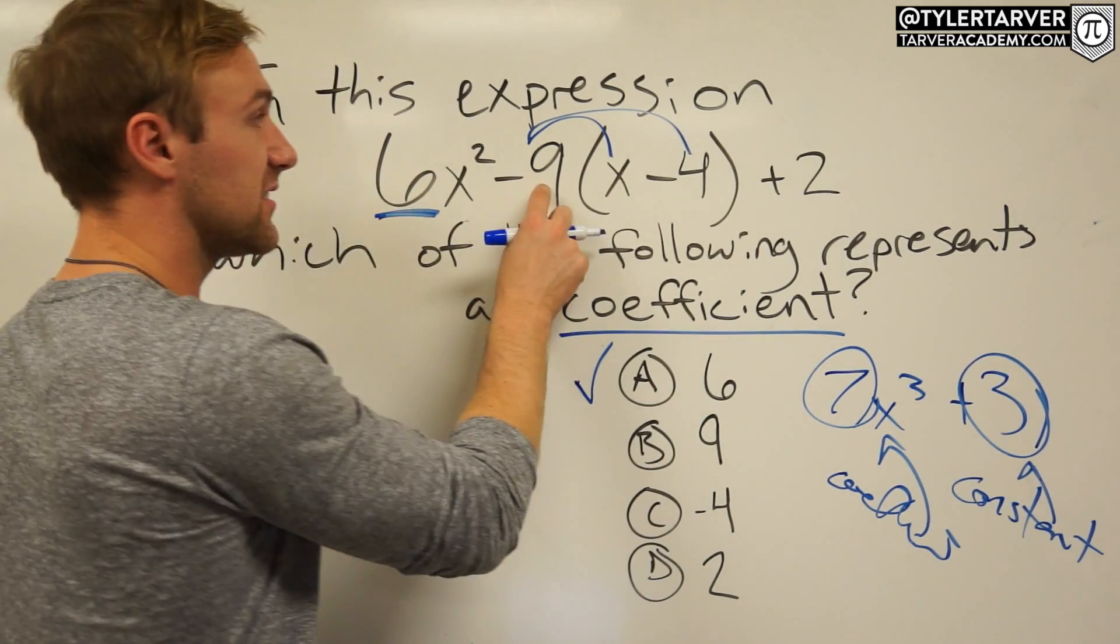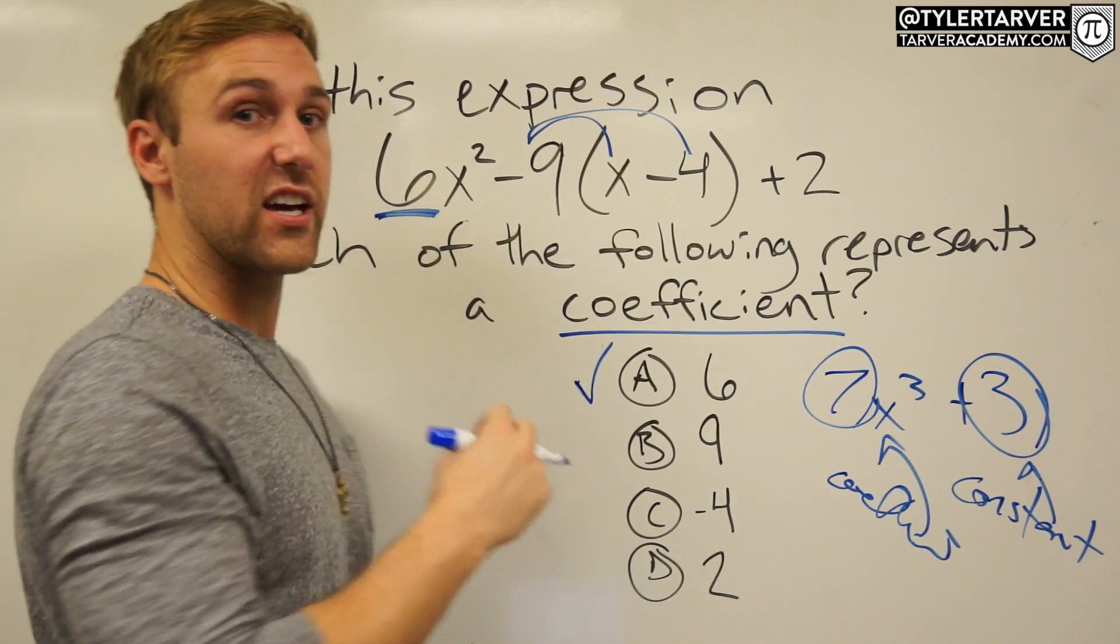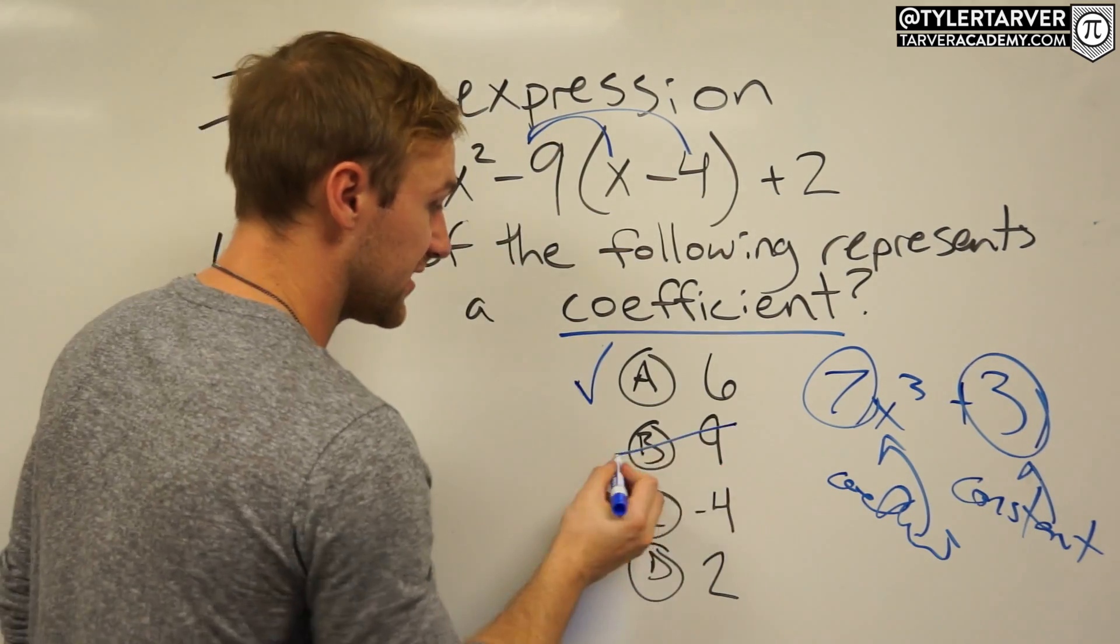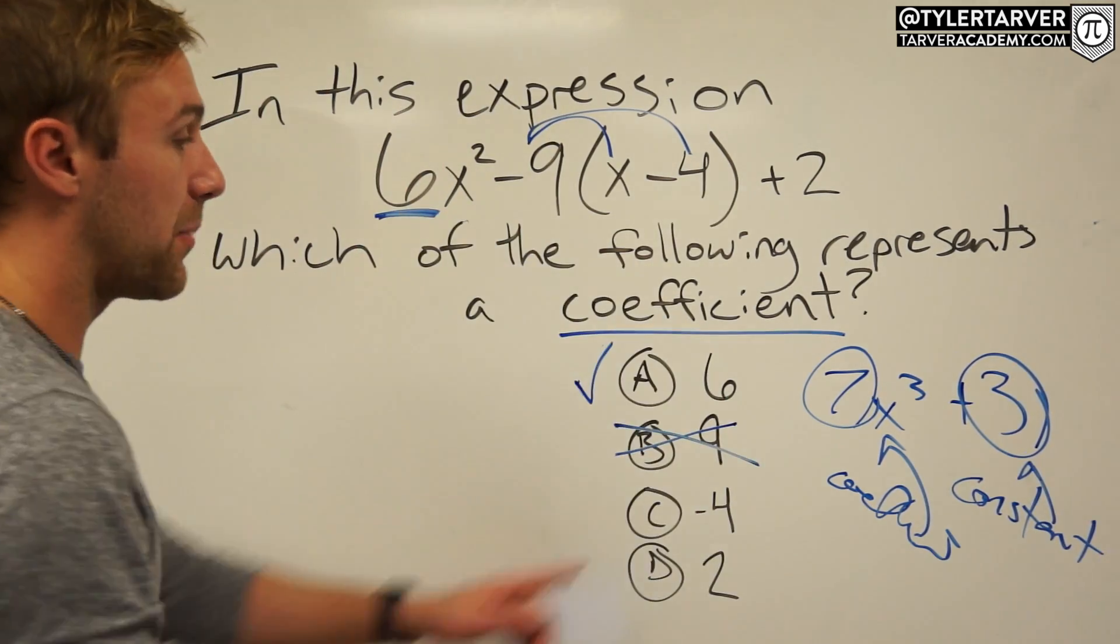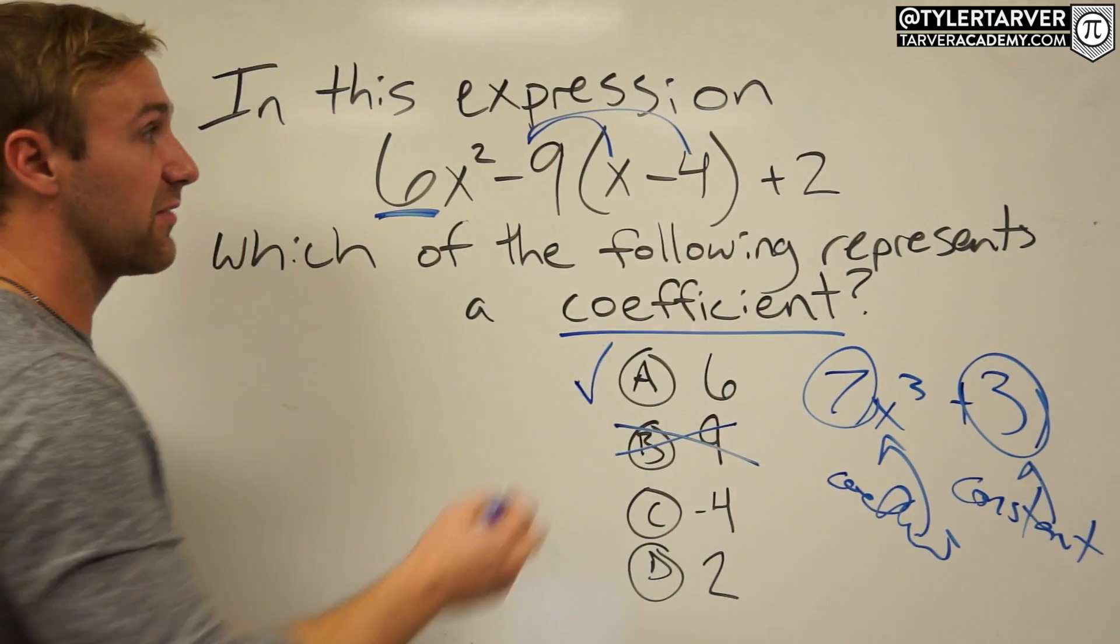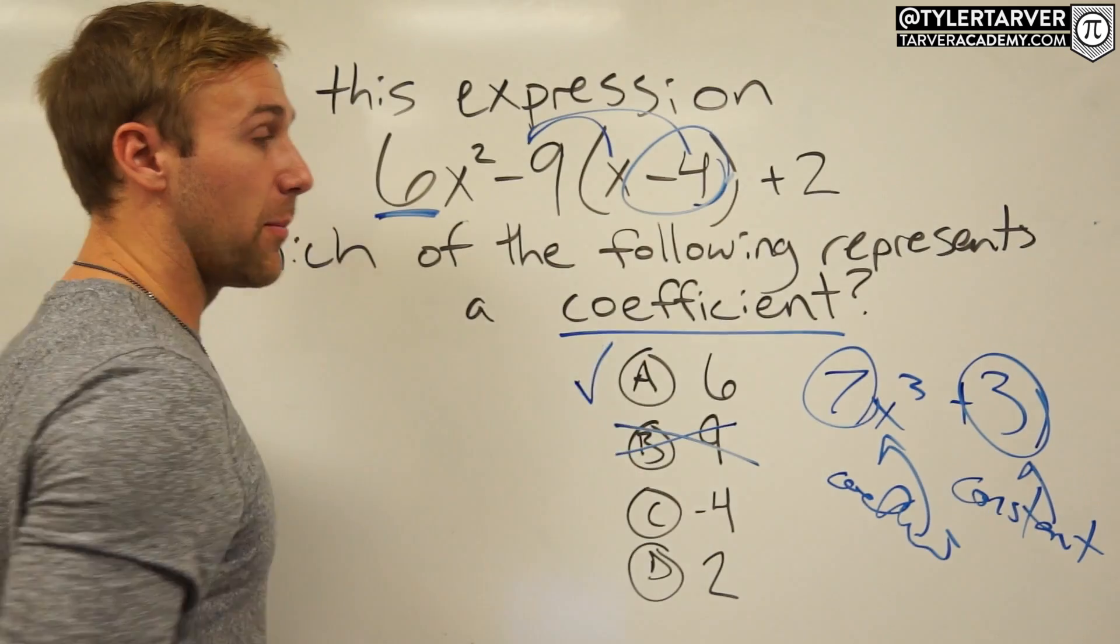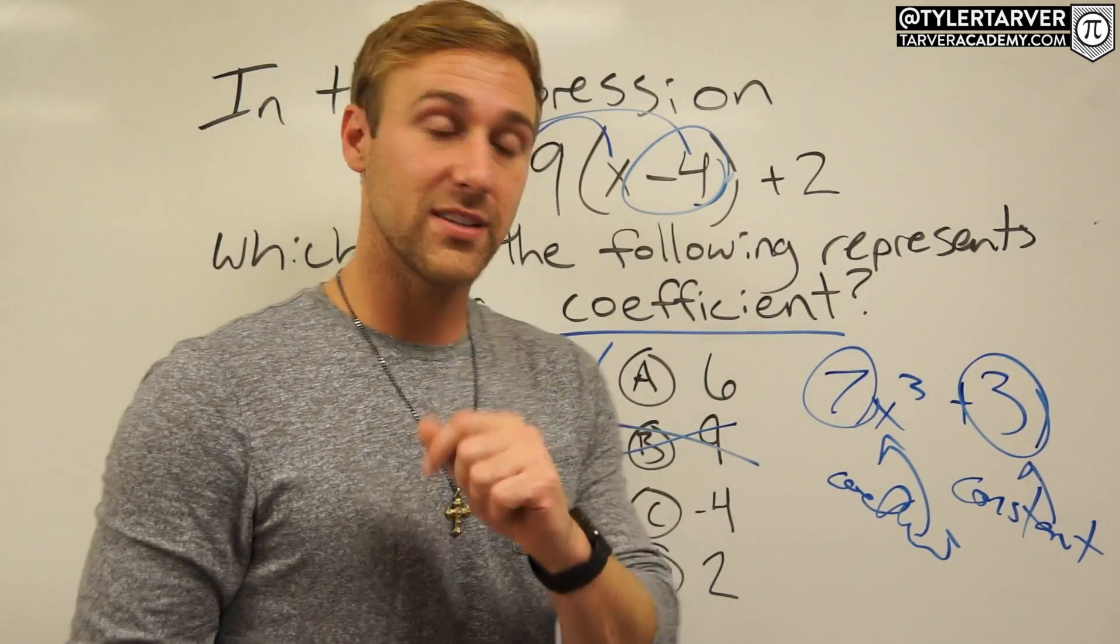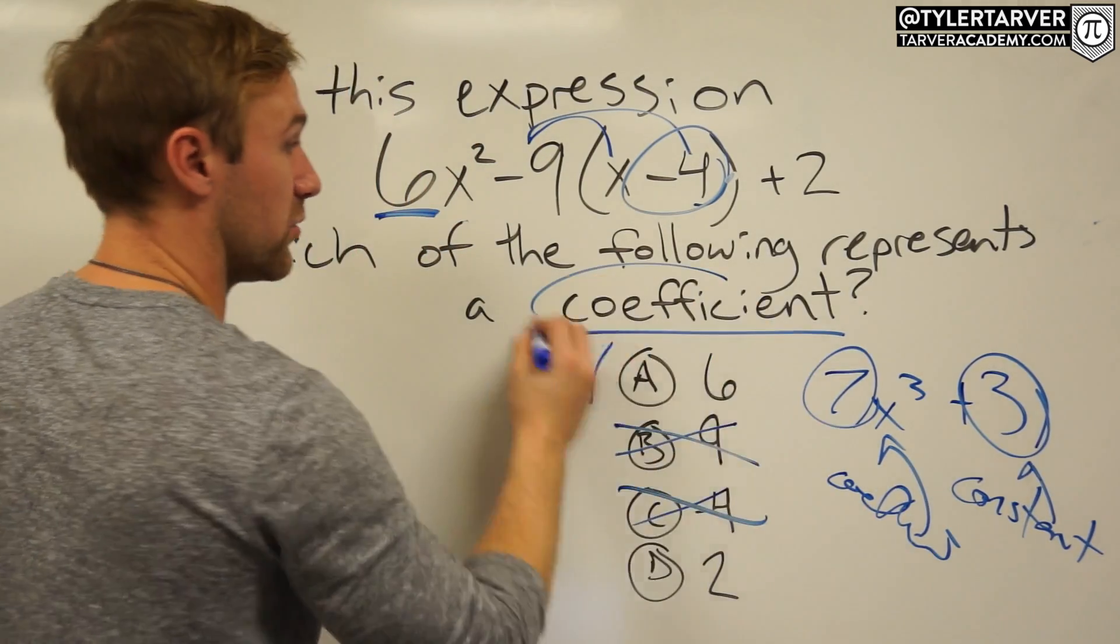So negative nine could be an answer, however these tricksters tried to trick you. That's a positive nine. This nine when distributed would take the negative with it, therefore this is not even an option because there's not a positive nine in this entire equation. So we know it's not B.